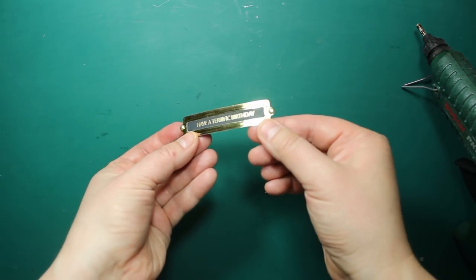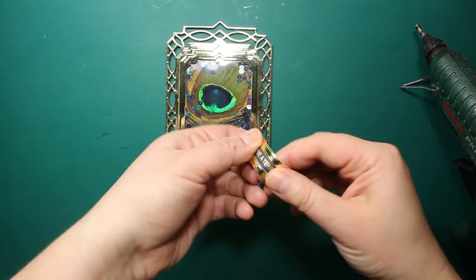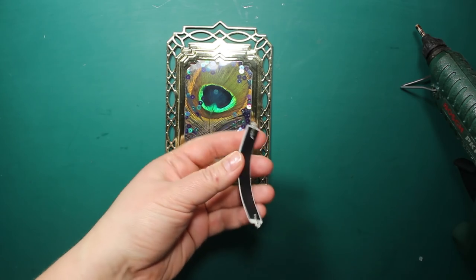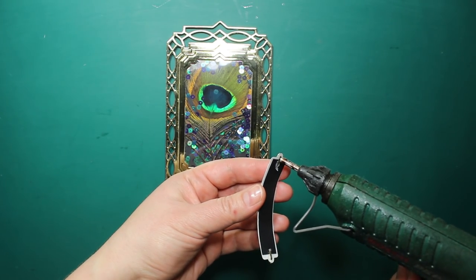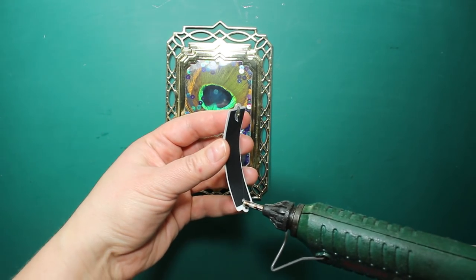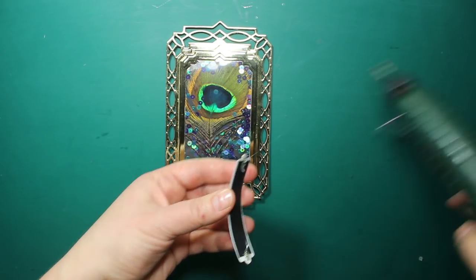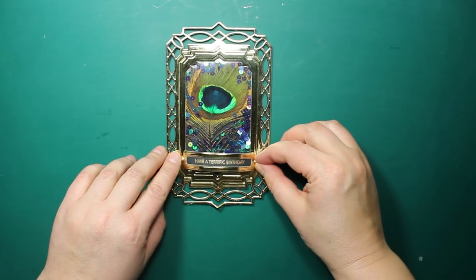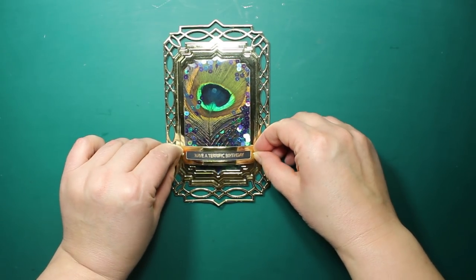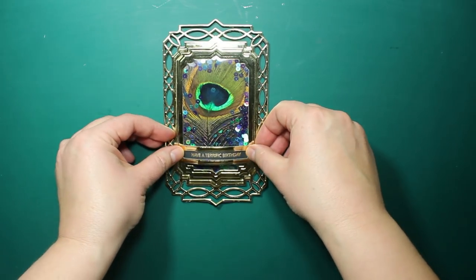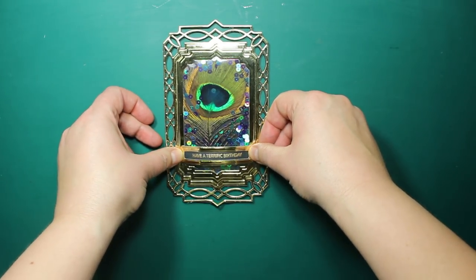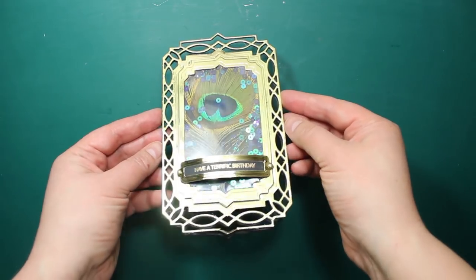I'm shaping this strip a little bit with my fingers and then I'm applying some hot glue at both ends and pressing them down onto the card front. Now the card is finished.